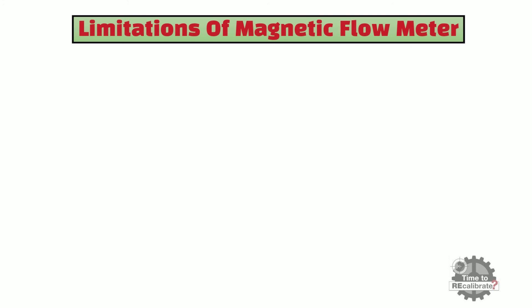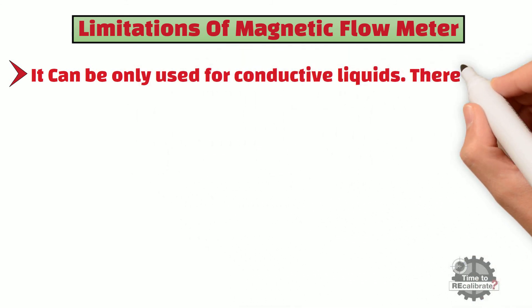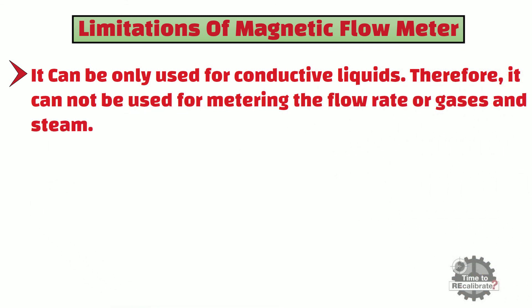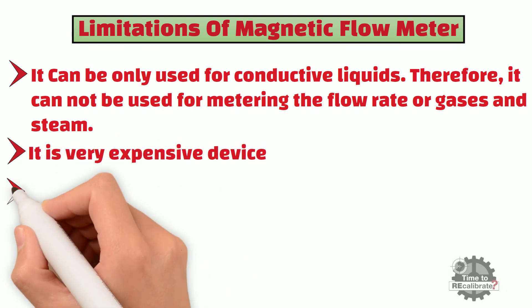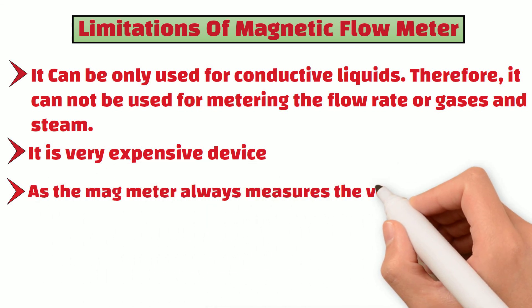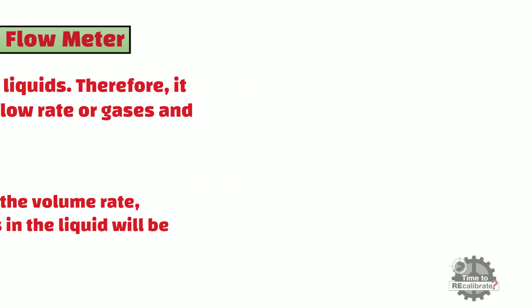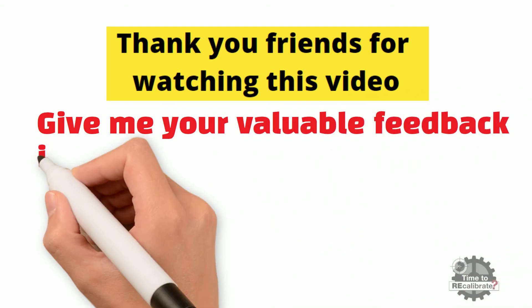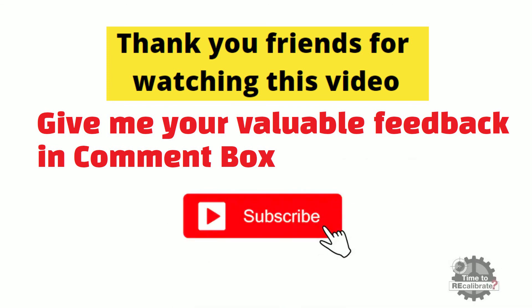Limitations of electromagnetic flowmeters: they can only be used for conductive liquids and therefore cannot be used for metering the flow rate of gases or steam. They are also a very expensive device. Additionally, since the magnetic meter always measures volume rate, the volume of any suspended solids in the liquid will be included in the measurement. Thank you friends for watching — please give your valuable feedback in the comment box, and subscribe so you don't miss future videos.